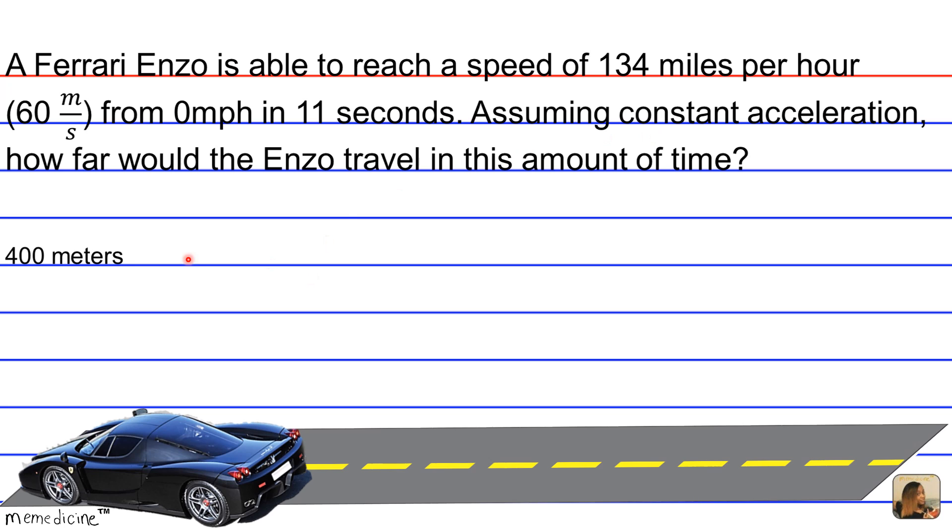Would it be A, 400 meters, B, 660 meters, C, 330 meters, or D, 5.45 kilometers?